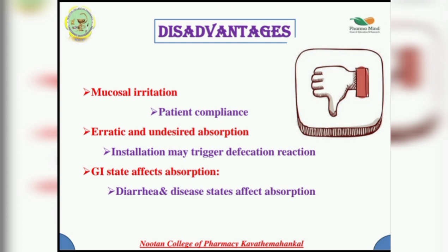Fourth disadvantage: installation may trigger infection — infection reaction can occur affecting absorption. Fifth, diarrhea and disease state affect absorption. The depth of suppository insertion from the anus increases drainage through the superior hemorrhoidal veins, which drives drugs into the liver causing first-pass metabolism.